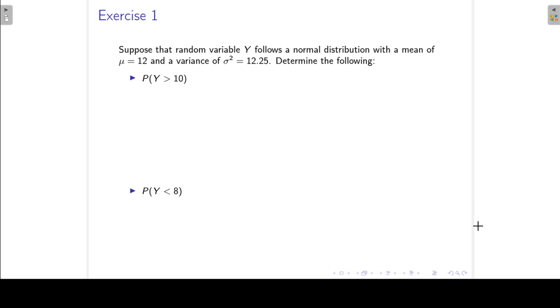In this lab we are going to look at exercises on the normal distribution. So let's have a look at exercise 1. Suppose that random variable Y follows a normal distribution with a mean of 12 and a variance of 12.25. Then we would like to calculate a few probabilities.